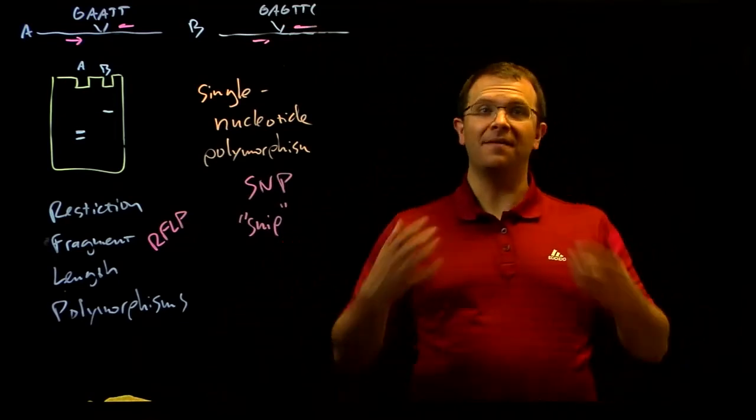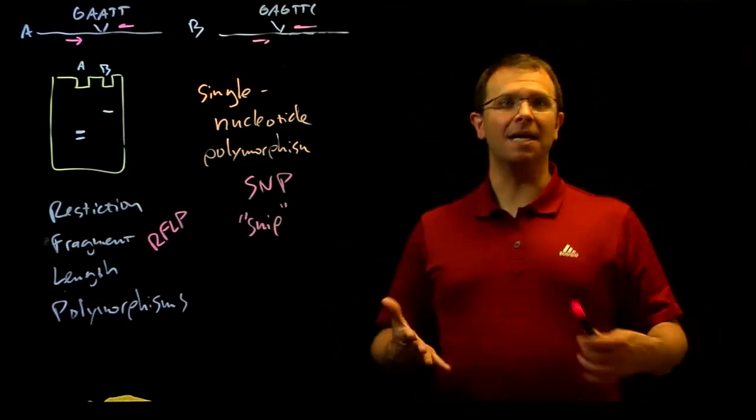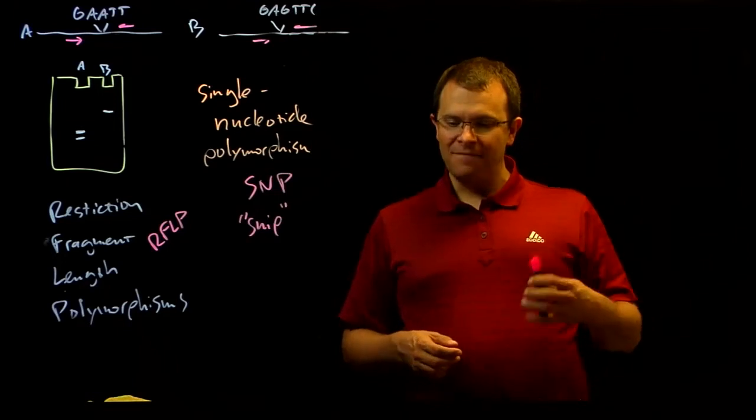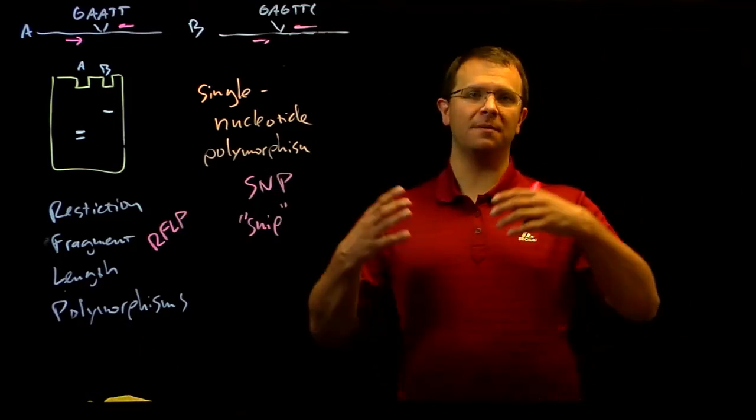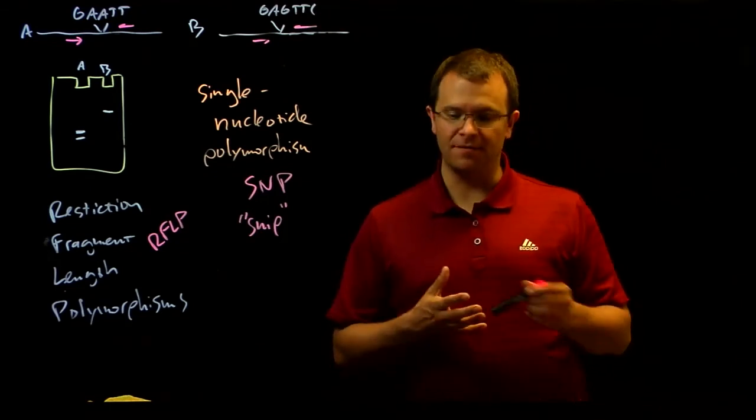For example, if I have an A and you have a G. And as we saw when we discussed mutations, if that polymorphism shows up in a protein coding gene, it can have a dramatic impact on that protein's function.